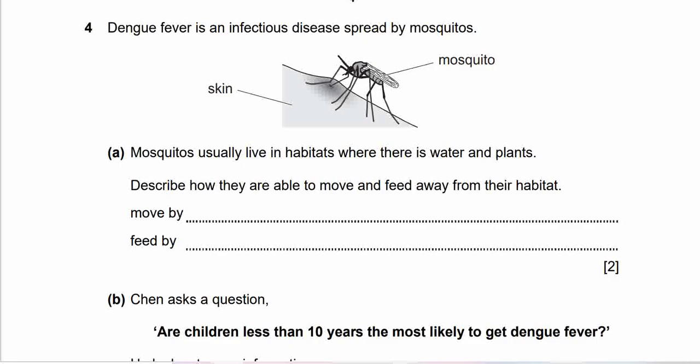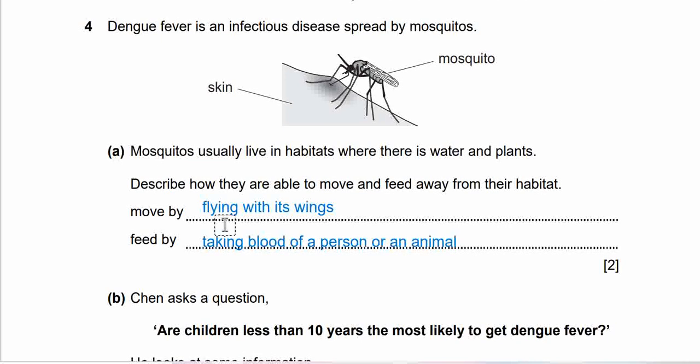Question 4: Dengue fever is an infectious disease spread by mosquitoes. Mosquitoes usually live in habitats where there's water and plants. Describe how they are able to move and feed away from their habitat - how they move and how they feed. We'll reveal it soon, you may pause if you're not ready. The answer: Flying with its wings to move, and feed by taking blood of a person or an animal.